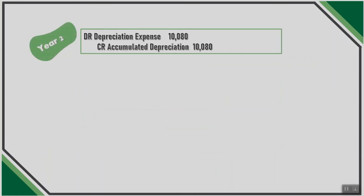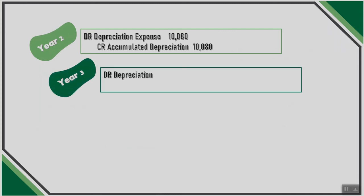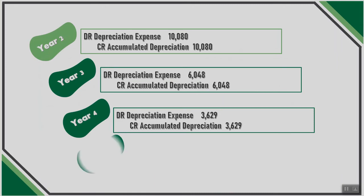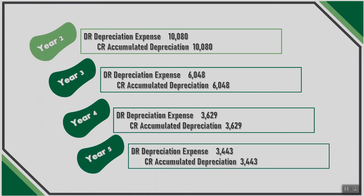Looking at journal entries year over year with the changing amounts: in year 2, debit depreciation expense $10,080, credit accumulated depreciation $10,080. Year 3, the same journal entry for $6,048. Year 4, $3,629. And finally in year 5, depreciation expense and accumulated depreciation of $3,443.